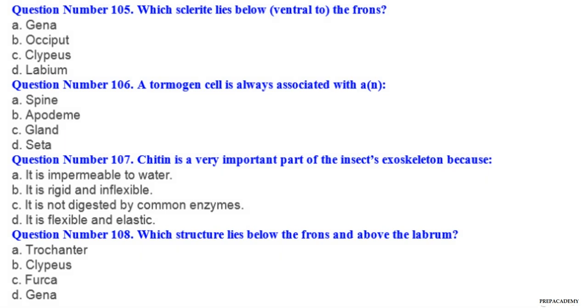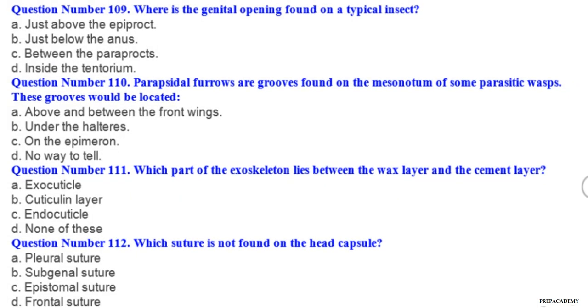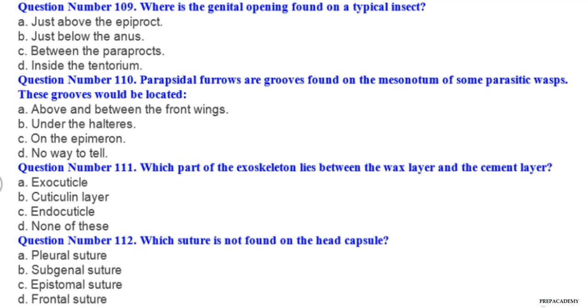Question number 109. Where is the genital opening found on a typical insect? A just above the epiproct, B just below the anus, C between the paraprocts, D inside the tentorium. Question number 110. Parasidal furrows are grooves found on the mesonotum of some parasitic wasps. These grooves would be located: A above and between the front wings, B under the halteres, C on the epimeron, D no way to tell.